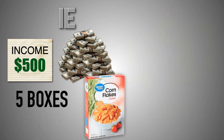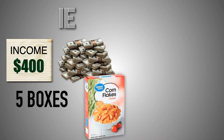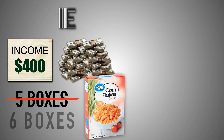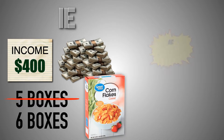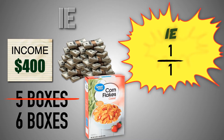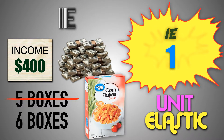Now suppose that a consumer's disposable income decreases from $500 to $400, and their demand for supermarket brand cereal, an inferior good, increases from 5 boxes to 6 boxes. When the consumer's disposable income fell by 20%, the consumer increased their consumption of supermarket brand cereal by 20%. This gives us an income elasticity coefficient of 1, which means that the consumer's demand for supermarket brand cereal, an inferior good, is income unit elastic.